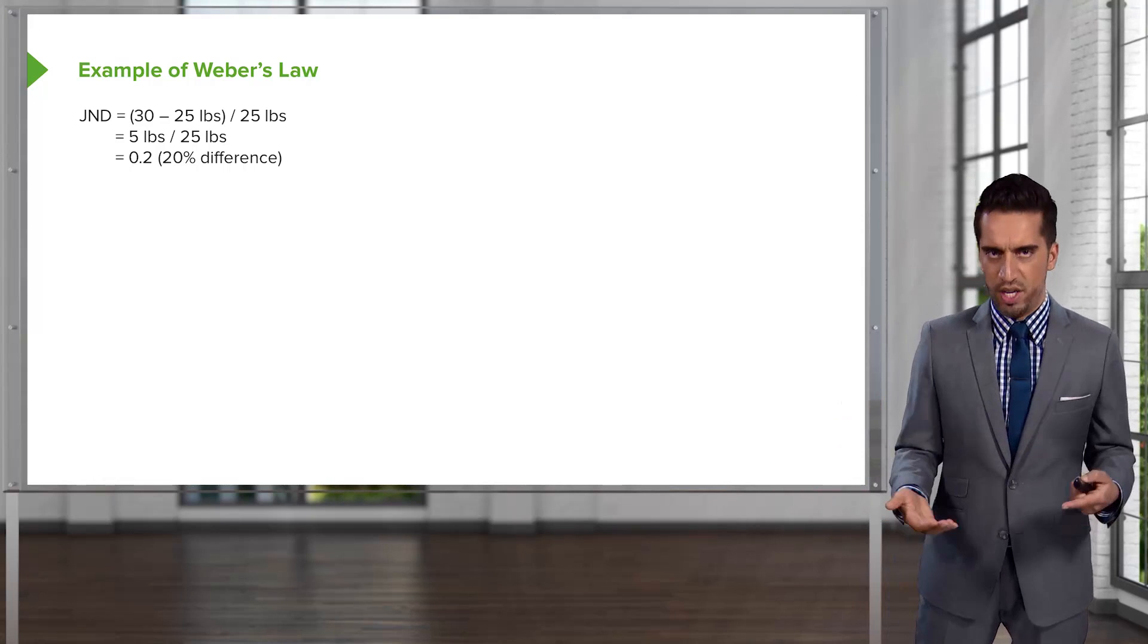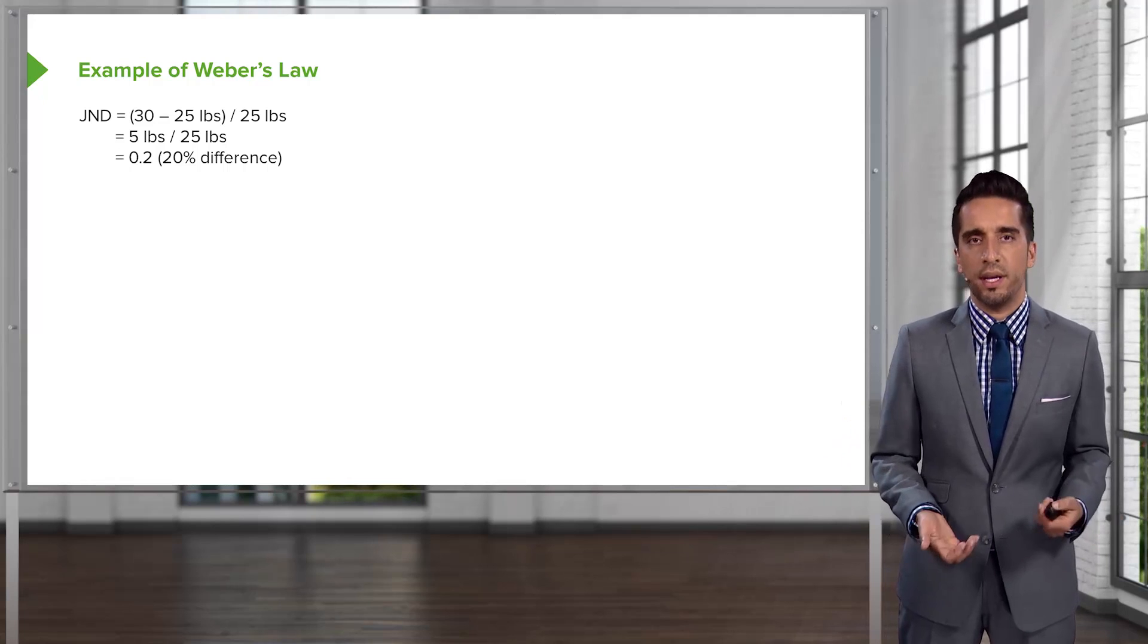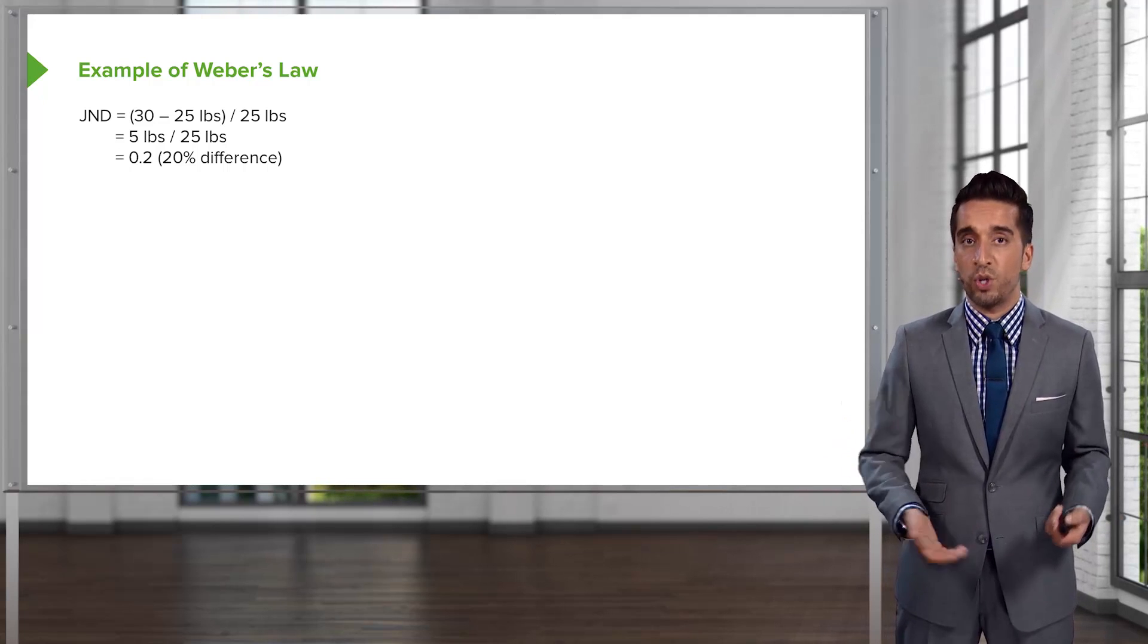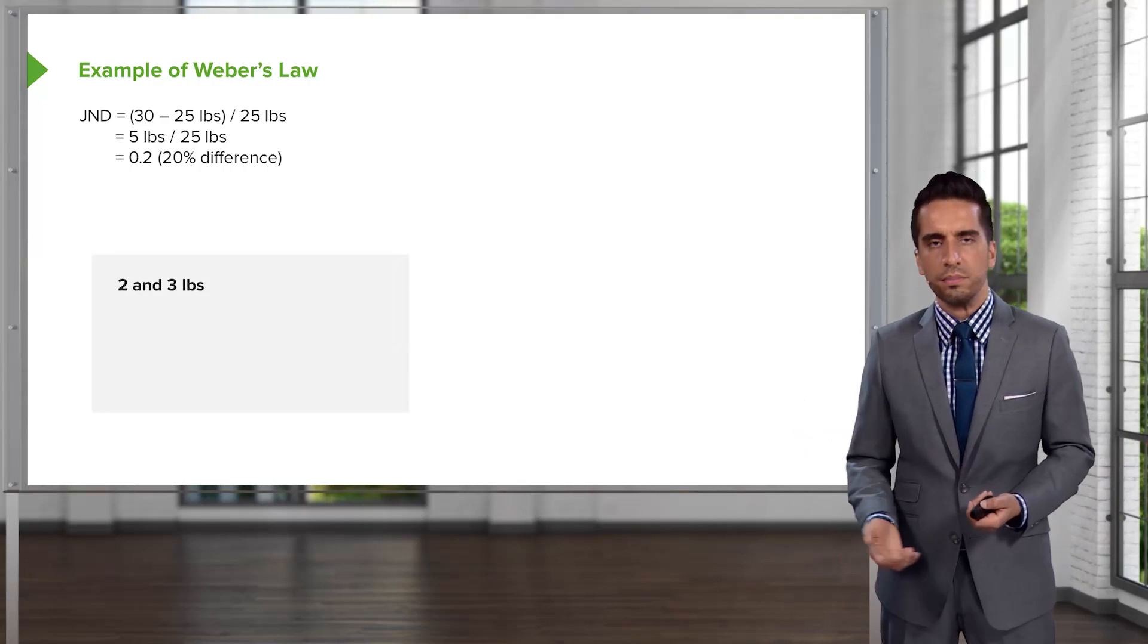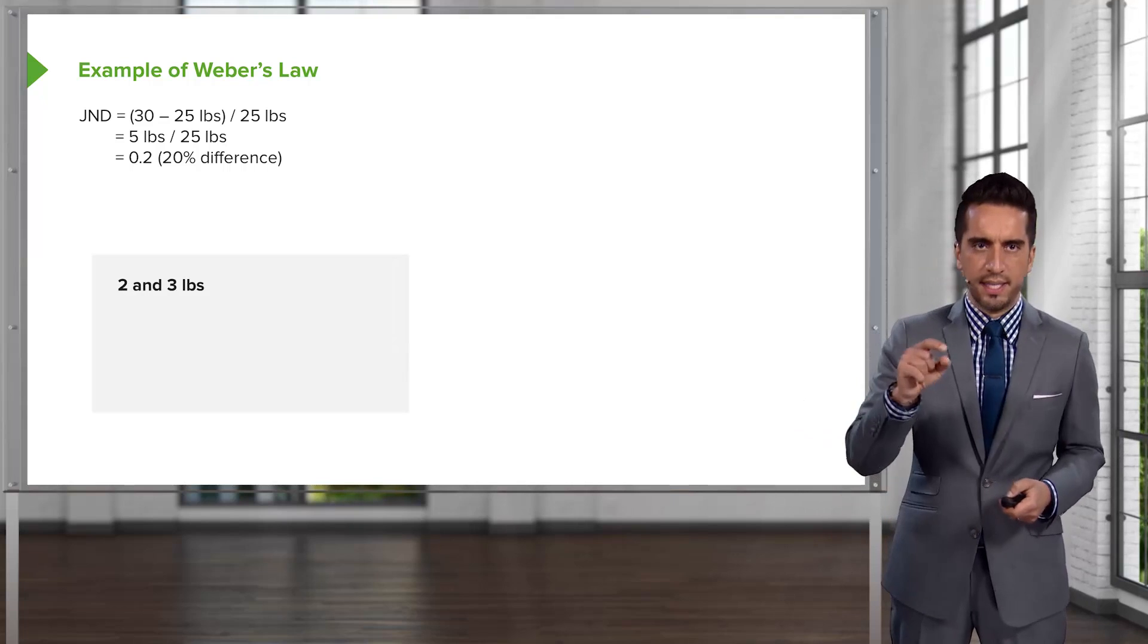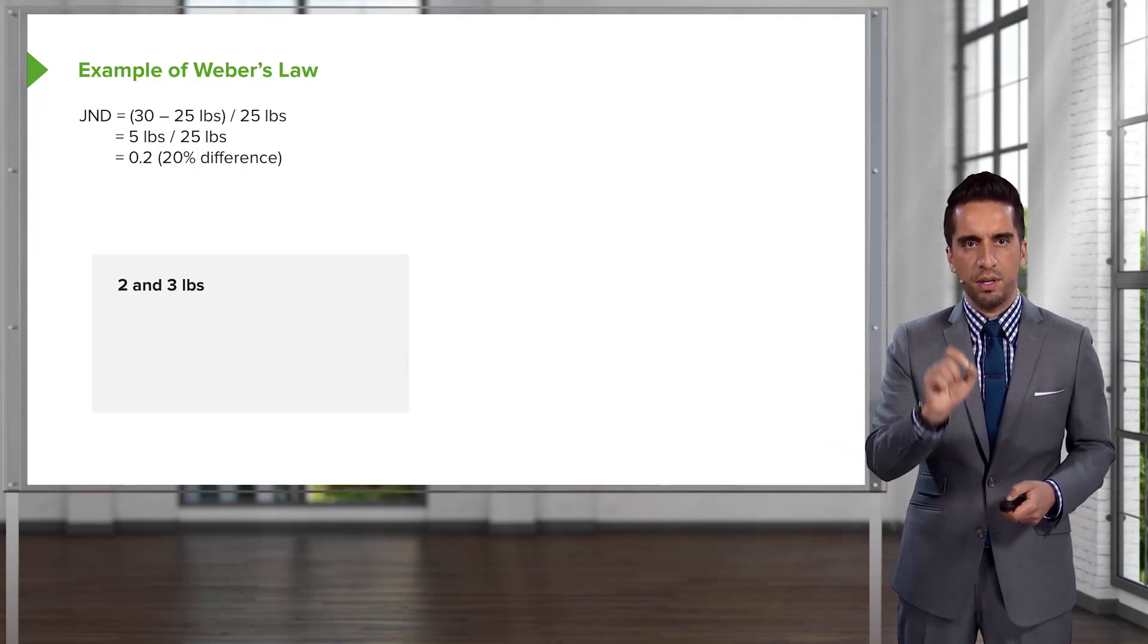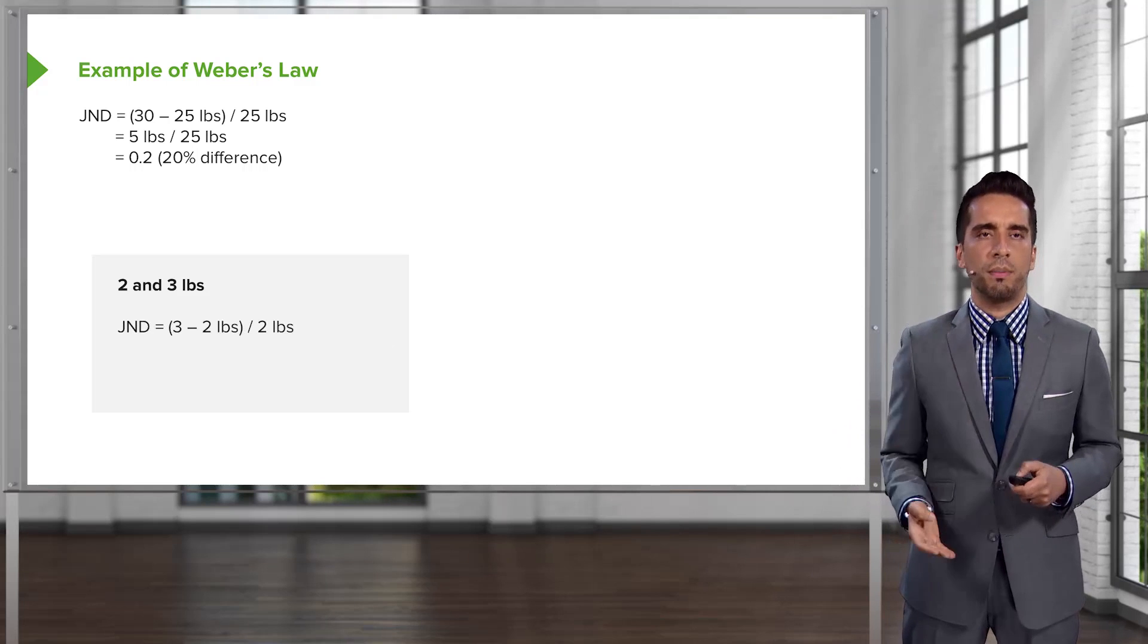So, what that means in English is, little Timmy can detect a 20% difference in weight. And when there is that 20% difference or more, he will say, yes, these two bags are different. So, we had two options, 2 and 3 pound bag. Can Timmy detect the difference between a 2 and 3 pound bag? So, using the relationship that we just figured out up top.